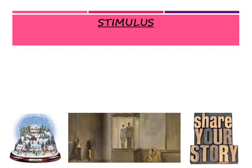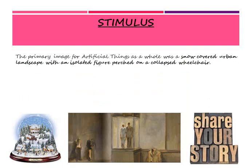Next we are moving on to the stimulus. If you can remember back to when we discussed 'Within Her Eyes,' we always know there's a stimulus behind each piece of dance. The primary stimulus of Artificial Things as a whole was a snow globe-covered urban landscape, which is an isolated figure perched on a collapsed wheelchair. The way we remember the snow-covered landscape is we think of a snow globe, and we think of one person who is leaning against a wheelchair that is collapsed on the floor.